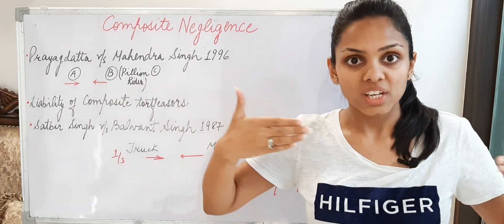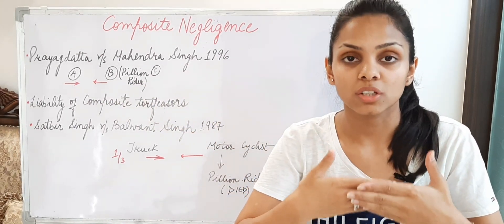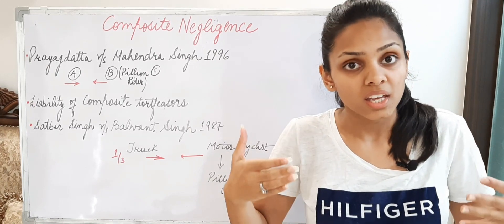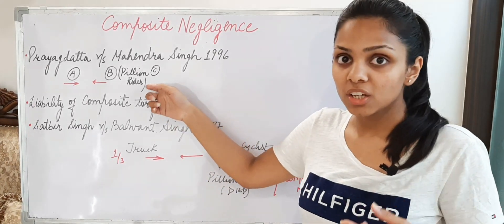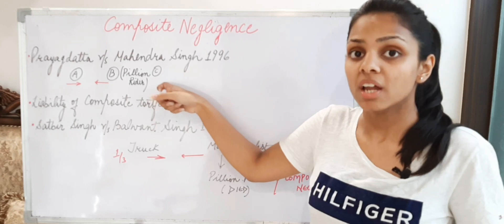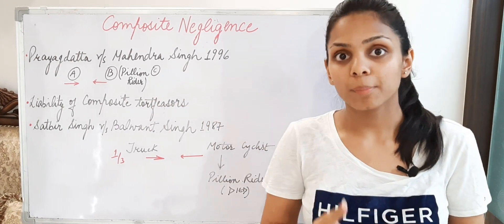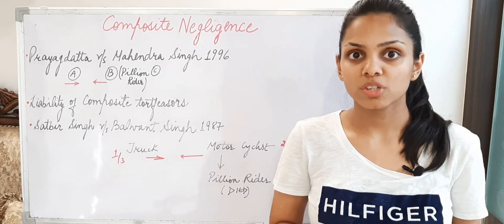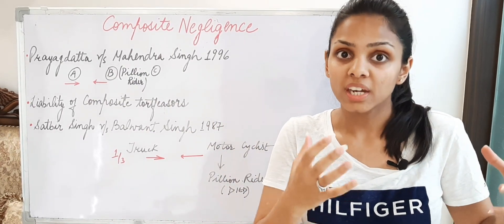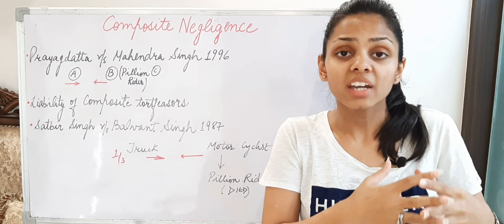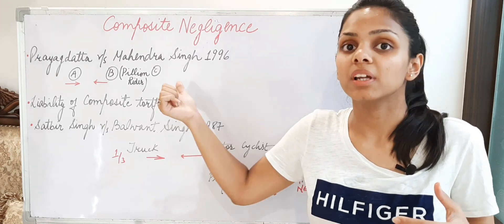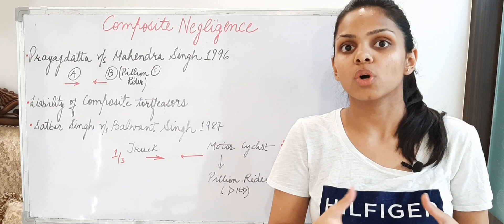They were going in opposite directions. As they came towards each other, they collided with each other — a collision occurred. As a result of which, there was negligence on the part of both of these parties. Due to their negligence, the pillion rider — that is, the person sitting behind the motorcyclist — let's call him C, the third party — he sustained injury and as a result of it, he died. The legal representatives of the deceased would definitely claim compensation from these defendants. Both are defendants in this case. So you can see how two people's negligence combines and the effect of that combined negligence is the injury to the plaintiff — the third party, the pillion rider. This is termed as composite negligence.